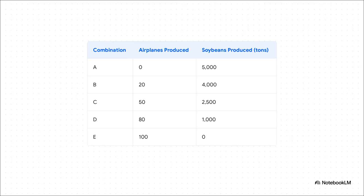And this is where that abstract idea becomes totally concrete. Just imagine a country that only makes two things: airplanes and soybeans. They can make 5,000 tons of soybeans if they make zero airplanes, or they can make 100 airplanes if they make zero soybeans, or some combination in between. The big takeaway here is this: to get more of one, you have to give up some of the other. There's no way around it.